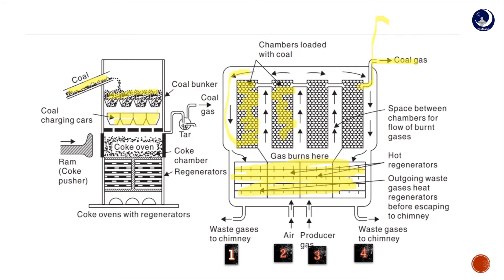The waste gases come out through the regeneratory bricks, which absorb temperature up to about 1000 degrees Celsius. When the process is repeated and temperature needs to be supplied again, it does not need to be 1200 degrees Celsius because the bricks already hold 1000 degrees Celsius. So only a lesser amount of temperature needs to be supplied along with air and producer gas.